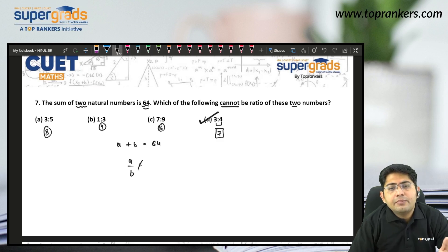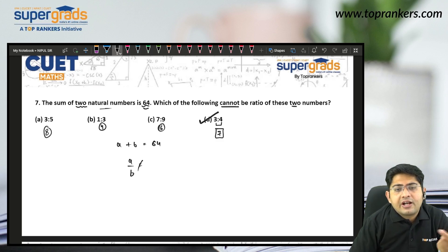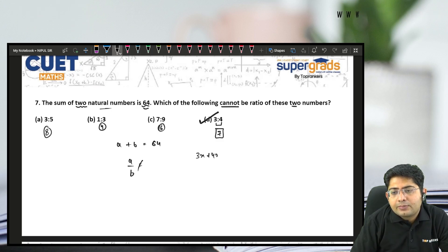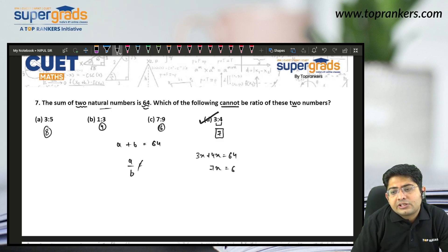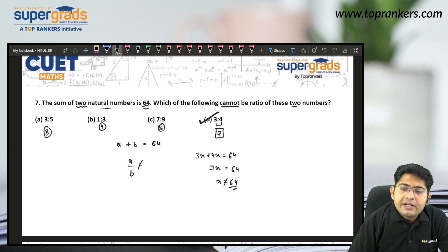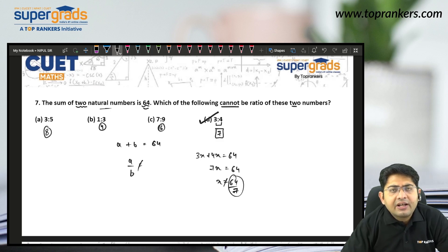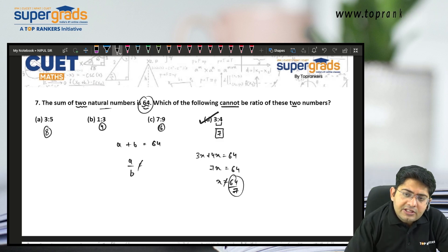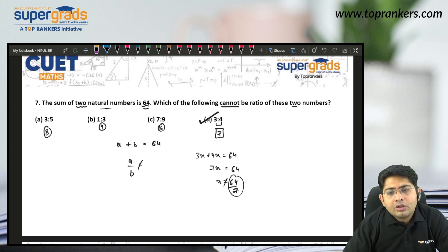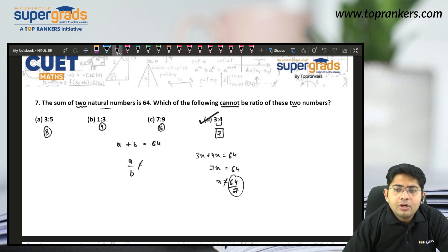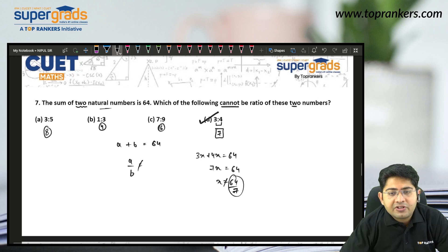This is because if the ratio is 3:4, then 3X plus 4X equals 64, so 7X equals 64, and X will not be an integer — meaning the numbers won't be natural numbers. So the rule is: add the ratio values and check if that sum is a factor of 64. If it is, the ratio is valid; if not, it cannot be the ratio.